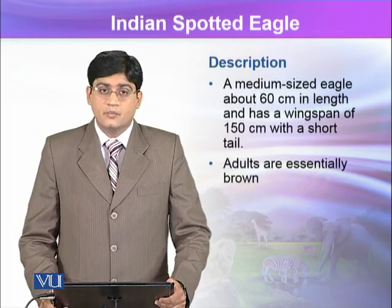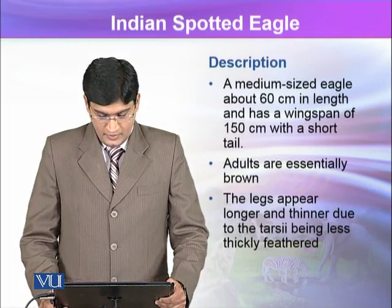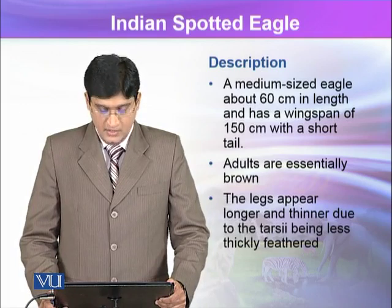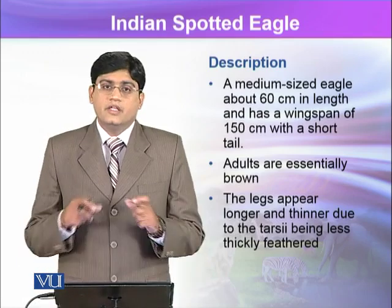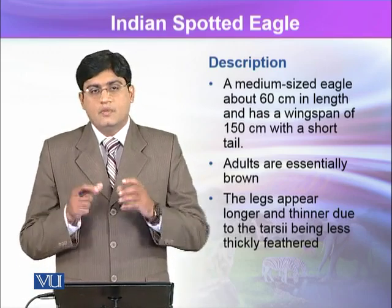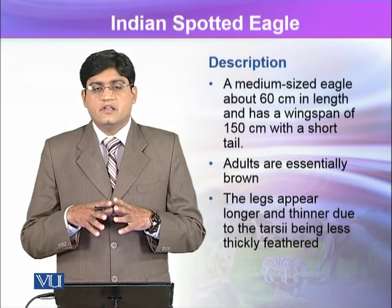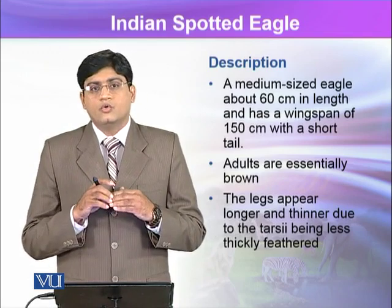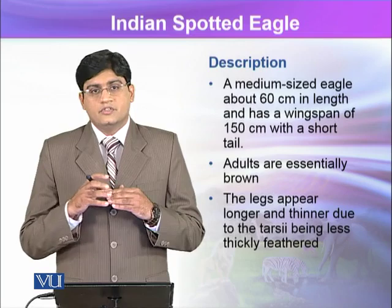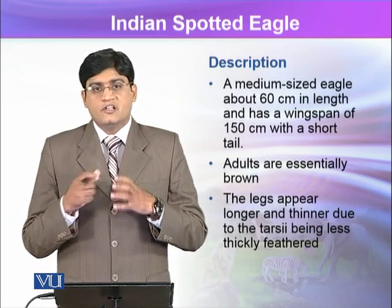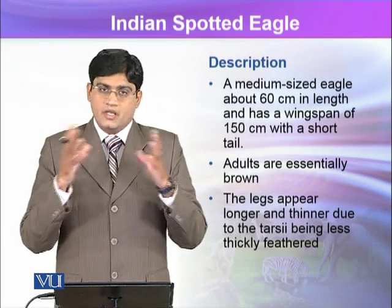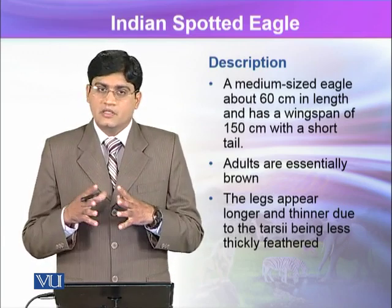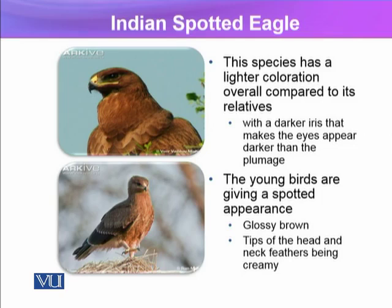Adults are essentially brown. The legs appear longer and thinner due to the tarsi being less thickly feathered — their legs are thin compared to their body size. The basic reason is that the toes have fewer thick feathers, though the rest of the body is completely covered with feathers.